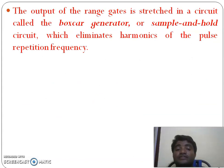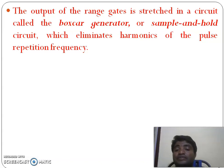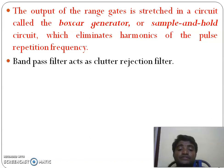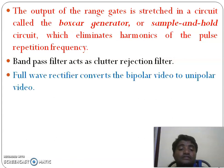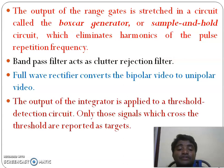The output of the range gate is stretched by the boxcar generator, also called a sample and hold circuit, which holds the previous sample value. This eliminates the harmonics of the pulse repetition frequency. The band pass filter is a clutter rejection filter that eliminates fixed targets. The full wave rectifier converts the bipolar video signal into a unipolar video signal.